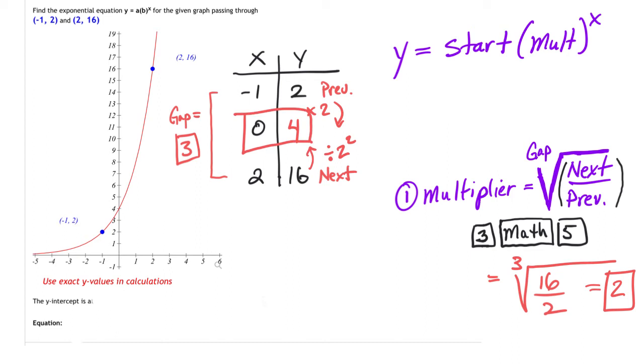Then from here I have my starting value, I have my multiplier, and I can now write the equation. So it's y equals starting value of 4, multiplier times 2 to the power of x. That's the equation. It's that easy.